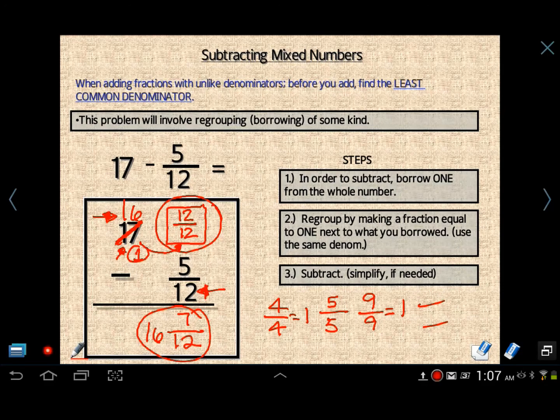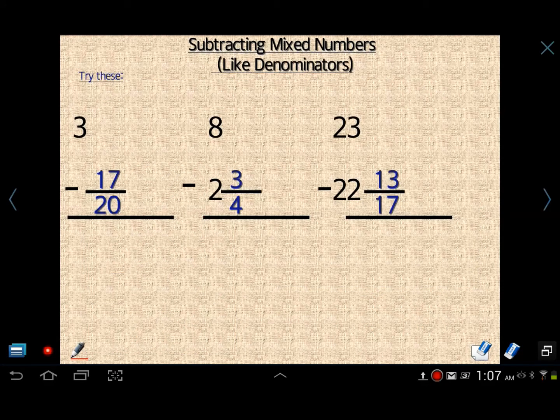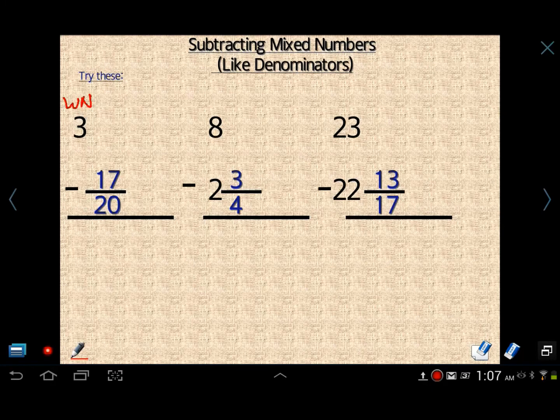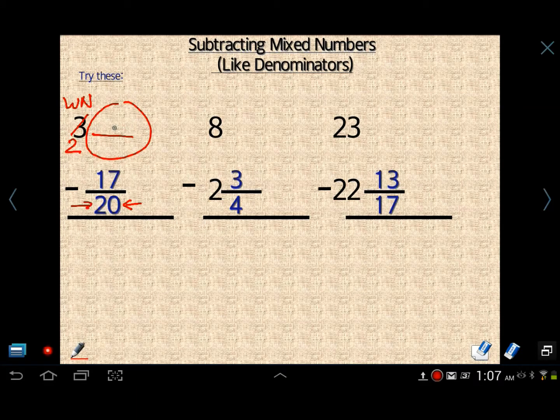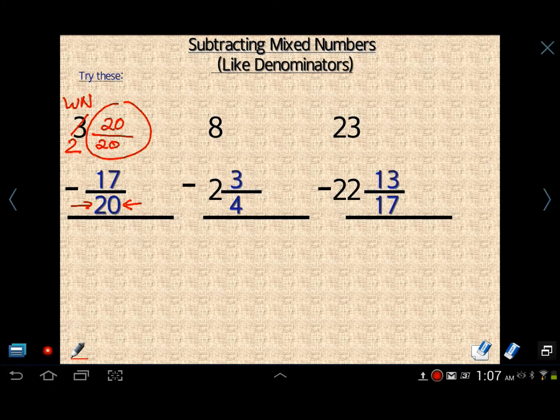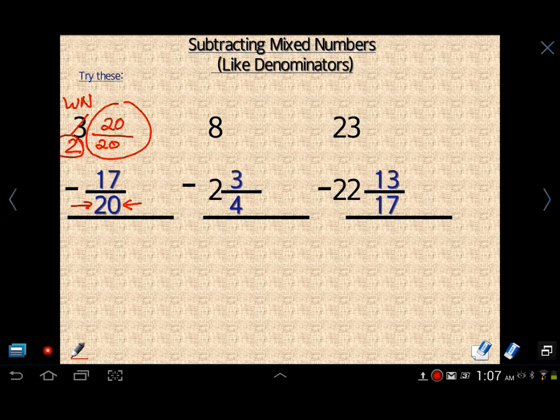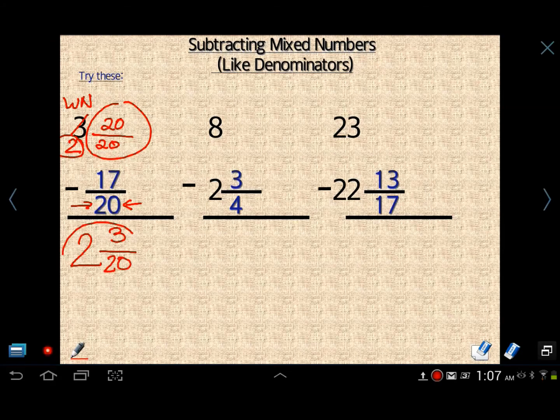So 16 and 7 12ths. That makes sense to me. Here's some other examples where you're starting with a whole number and you're subtracting a fraction. We need something here for sure. We need something there. So we borrow a 3. We make it a 2. What do we put next to that fraction? Well, look down here. That's 20. Well, let's not make this any more difficult than we need it to be. So just put 20 20ths. So what's the answer? Well, 2 minus nothing is still 2. 20 minus 17 is 3. You get 3 20ths. That's how that one's done.